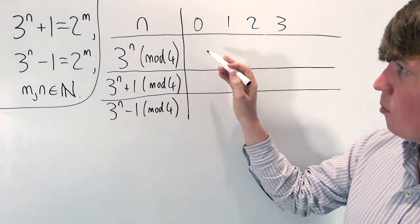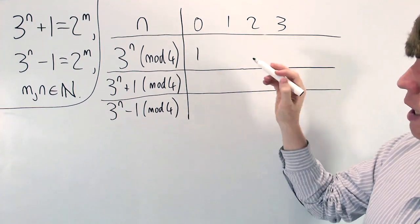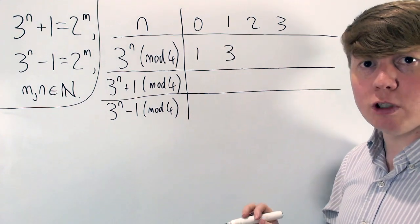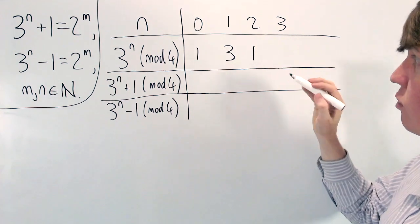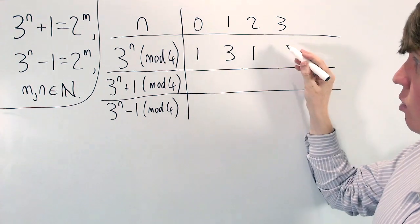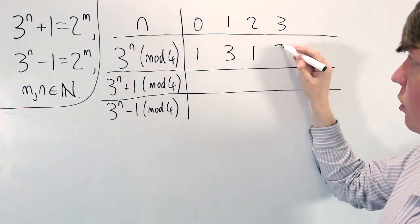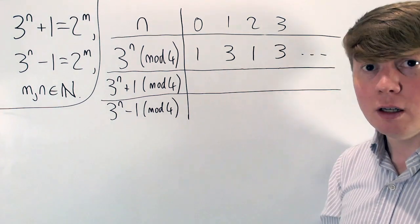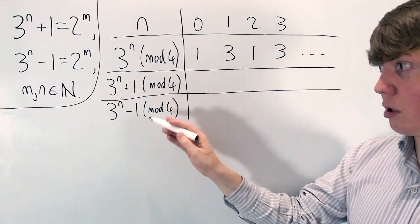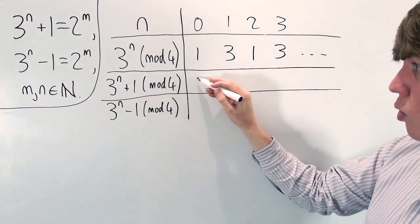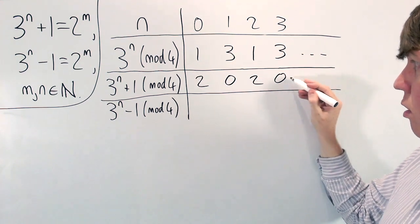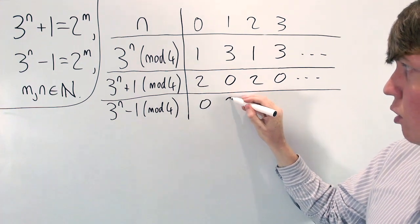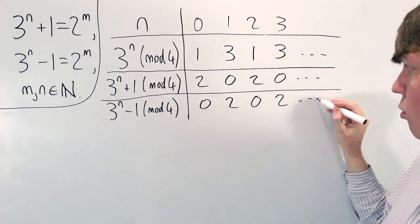So we'll explore this by looking at 3 to the n plus 1 and 3 to the n minus 1 mod 4, and see if this matches our powers of 2 which must be equivalent to 0 mod 4. Powers of 3 mod 4: when n is 0 it's 1, when n is 1 it's 3, when n is 2 it's 9 which is 1 mod 4, then 27 mod 4 is 3 — the pattern repeats 1, 3, 1, 3. So 3 to the n plus 1 goes 2, 0, 2, 0 repeating, whereas 3 to the n minus 1 goes 0, 2, 0, 2 modulo 4.